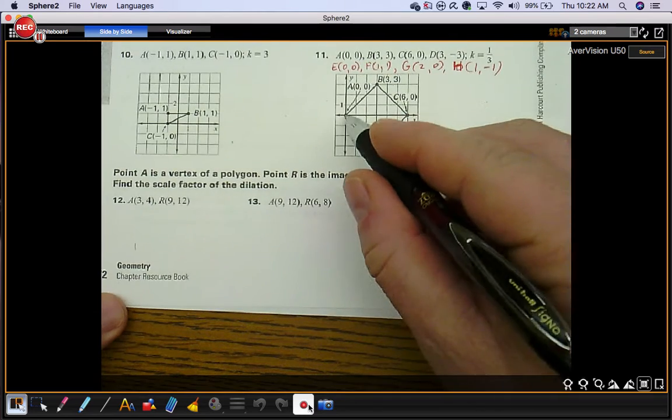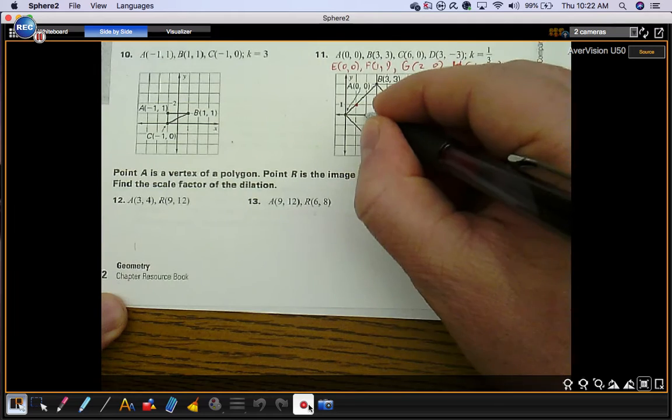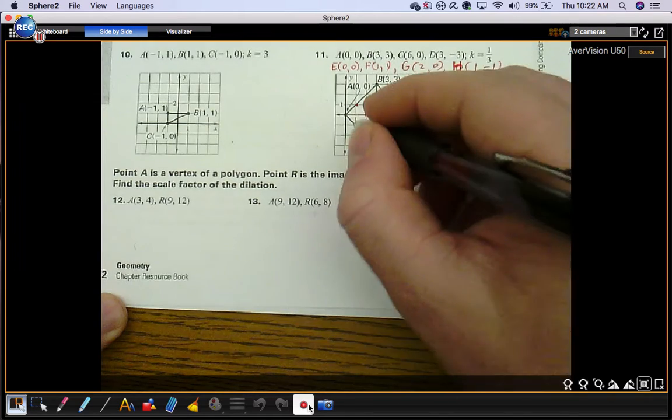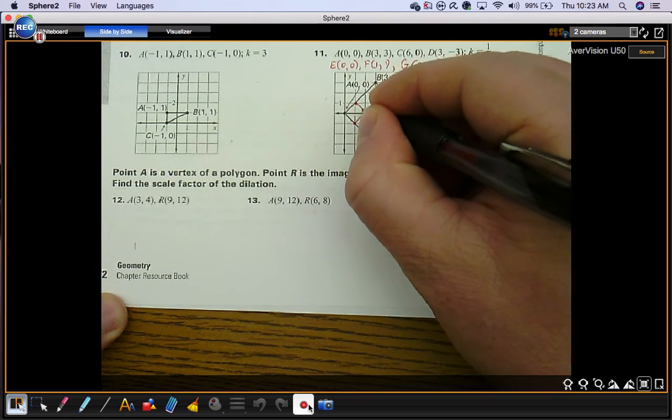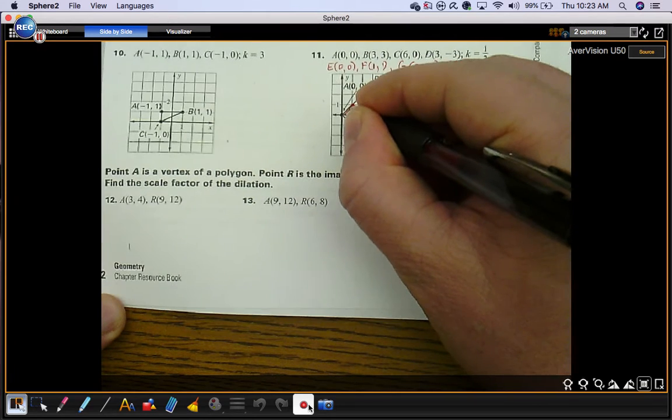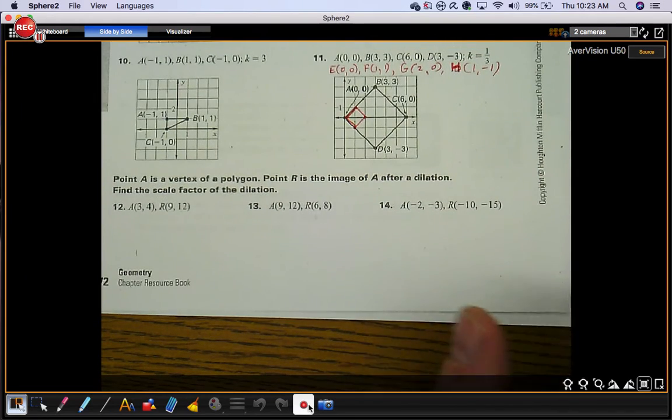Now, you just need to plot those four ordered pairs. We have a 0, 0, which is already there. We have a 1, 1, which lives here. We have a 2, 0, which lives there. And then we have a 1, negative 1, which lives there. So, your reduction looks like this. And those figures are guaranteed to be similar.